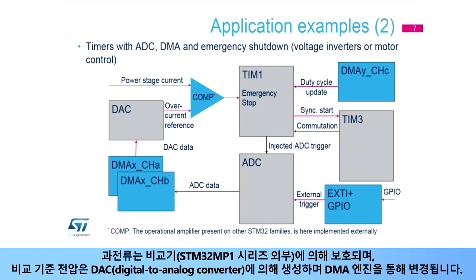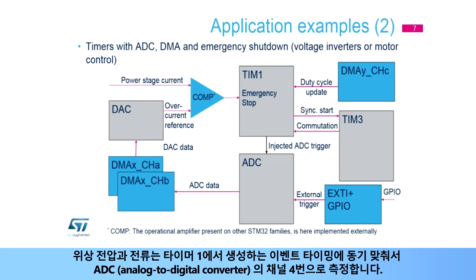The DAC reference is changed via the DMA engine. Phase voltage and currents are measured by an analog-to-digital converter, or ADC, which samples channel 4 synchronously with the events generated by Timer 1.